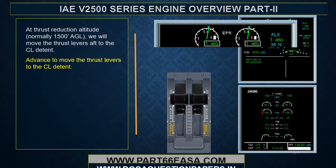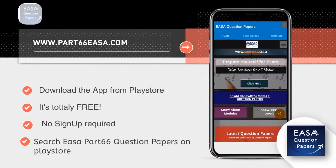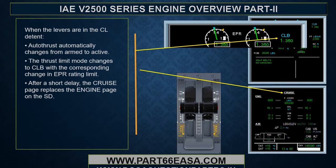At the thrust reduction altitude, normally 1500 feet AGL, move the thrust levers aft to the climb detent. When the levers are in the climb detent, autothrust automatically changes from armed to active. The thrust limit mode changes to climb with the corresponding change in EPR rating limit. After a short delay, the cruise page replaces the engine page on the SD.